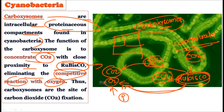What do the carboxysomes do? They create a higher concentration of CO2 around RuBisCO so that it always shows carboxylase activity and not oxygenase activity. The oxygenase activity is thus not shown. By concentrating CO2 around RuBisCO, they eliminate the competitive reaction with oxygen.